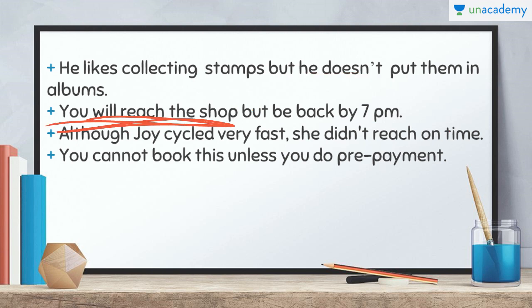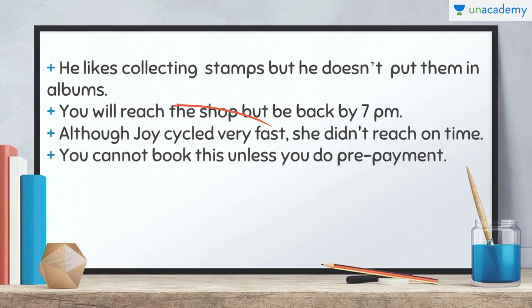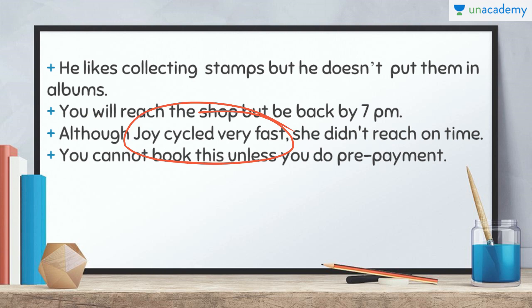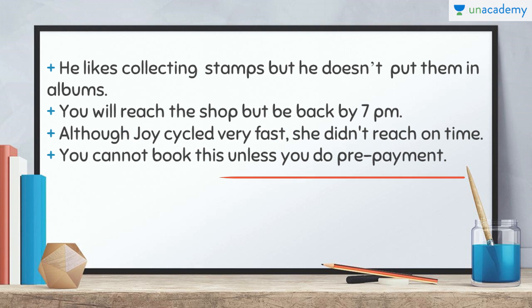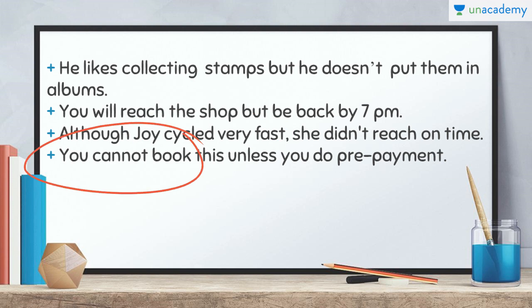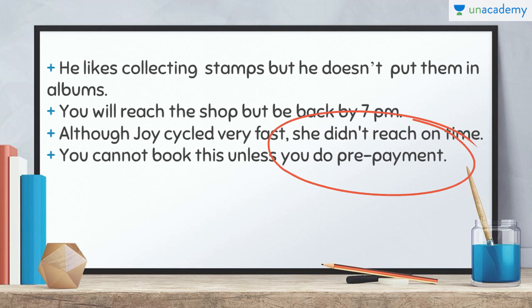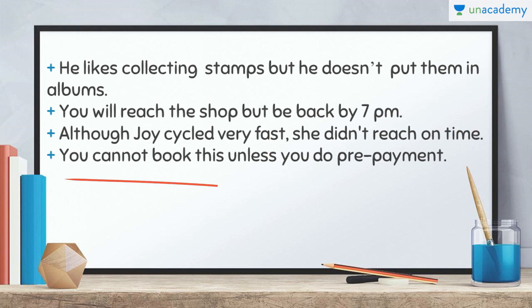Seventh: 'Although Joyce cycled very fast, she didn't reach on time.' Here 'although' is used at the start because in spite of her cycling very fast, she still didn't reach on time — she was supposed to reach on time but it didn't happen. 'Although' tells us something happened in the later part that was not supposed to happen as per the first part. Eighth: 'You cannot book this unless you do prepayment.' Something is there and the condition is in the second sentence — in such cases we use the conjunction 'unless'.